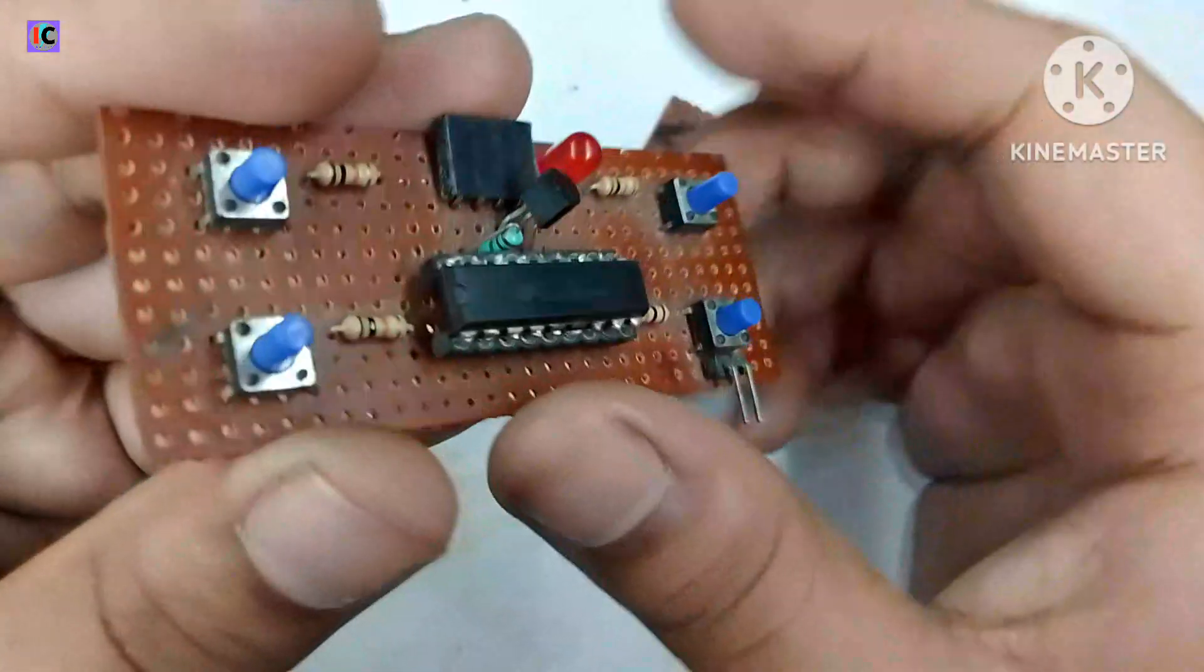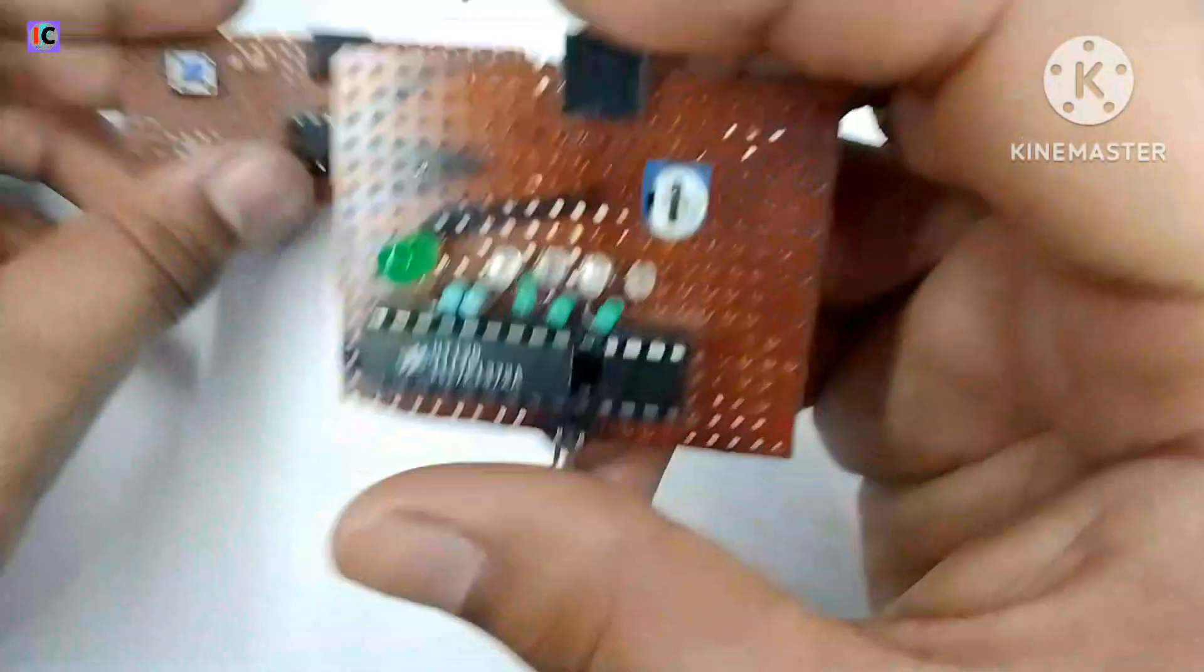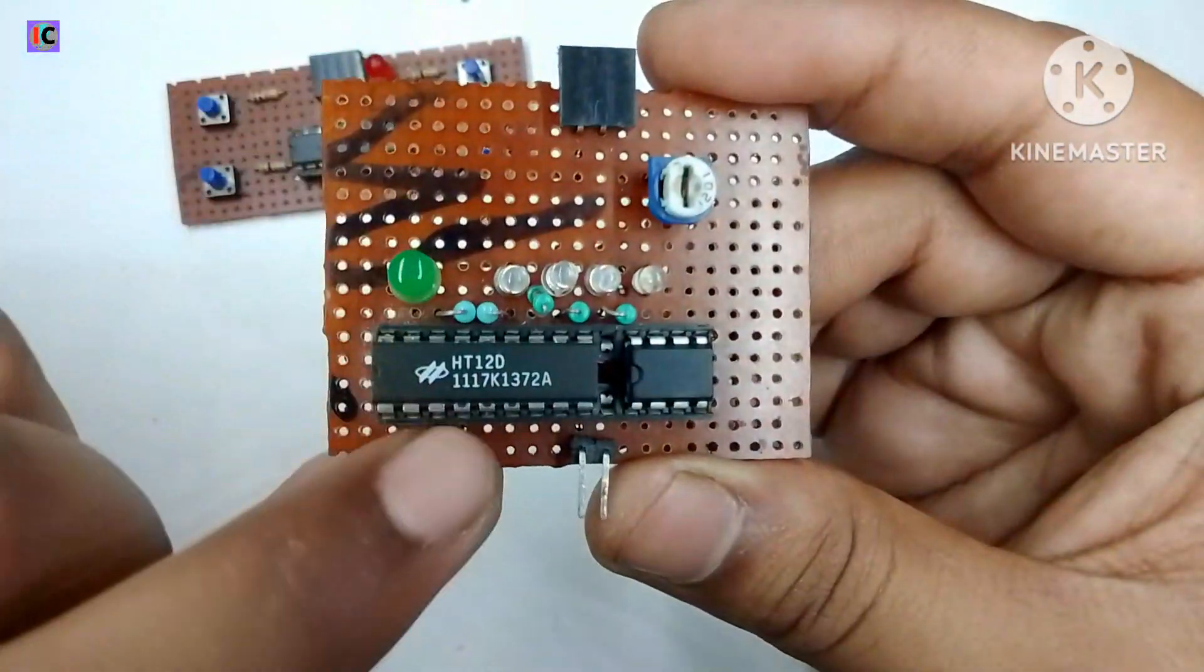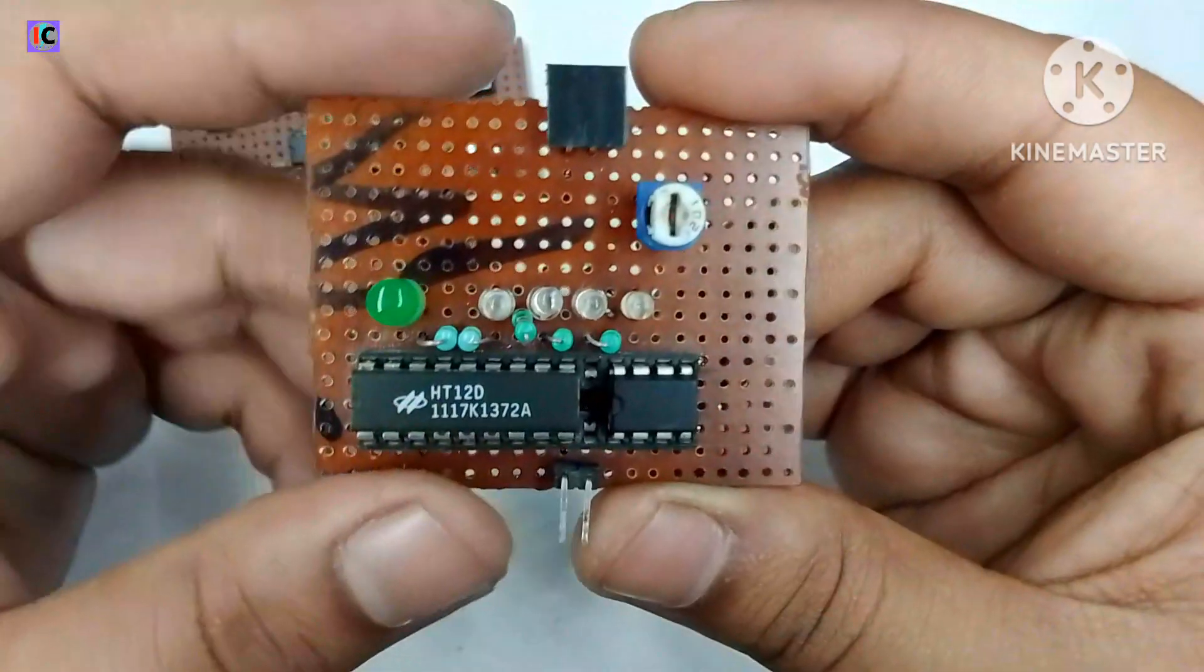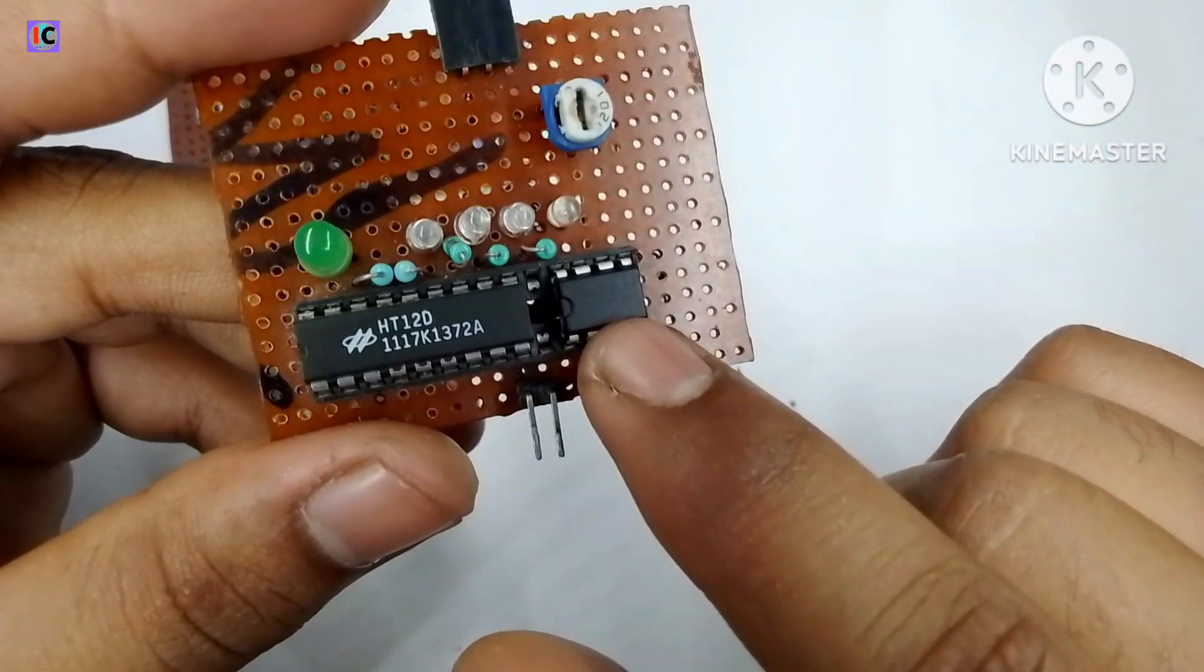For the driving of the laser I have used NPN transistor BC547 and in the receiver section I have used HD12D decoder IC which will decode the incoming signal from the laser into 4 bits.